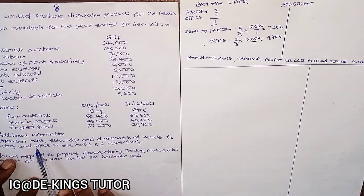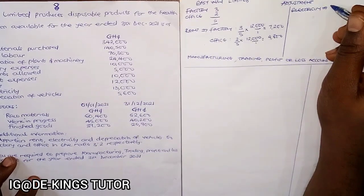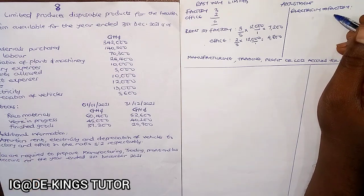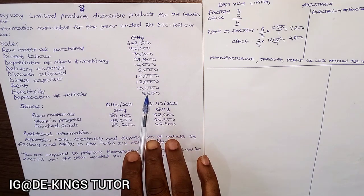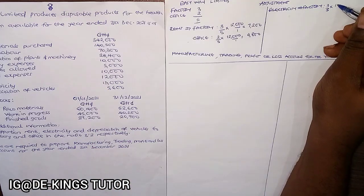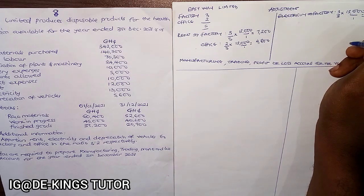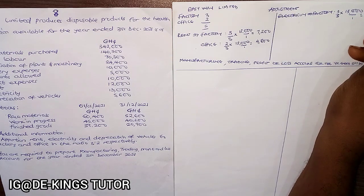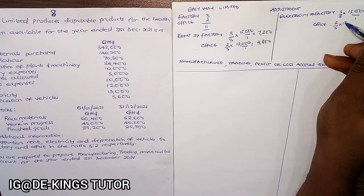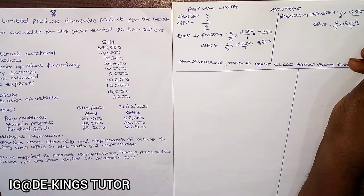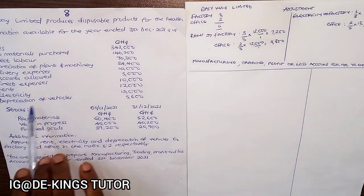Now for electricity: factory portion is 3/5 × 13,000 = 7,800. Office portion is 2/5 × 13,000 = 5,200. That completes the electricity apportionment.